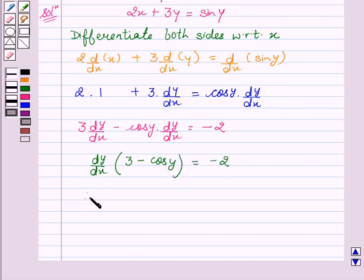Therefore, dy/dx equal to minus 2 upon (3 - cos y).